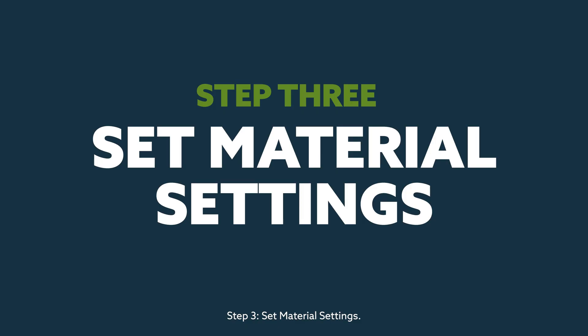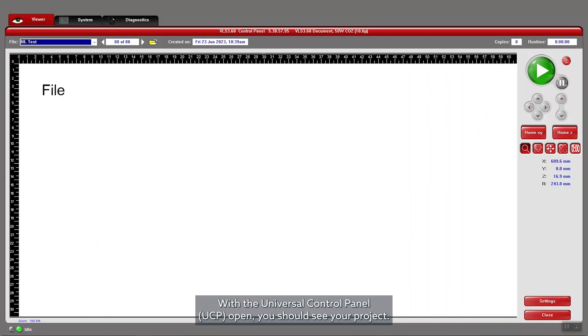Step 3: Set Material Settings. With the Universal Control Panel, or UCP for short, open, you should see your project. You can also access previous projects through the File tab.